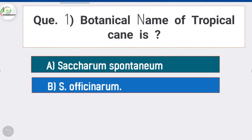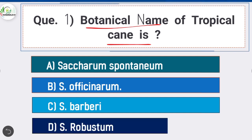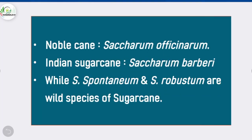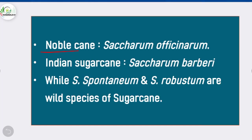Question 1: Botanical name of tropical cane. Option B is correct: Saccharum officinarum. Tropical cane is also known as noble cane, having botanical name Saccharum officinarum. Saccharum barberi is the botanical name of Indian sugarcane, while Saccharum spontaneum and Saccharum robustum are wild species of sugarcane.